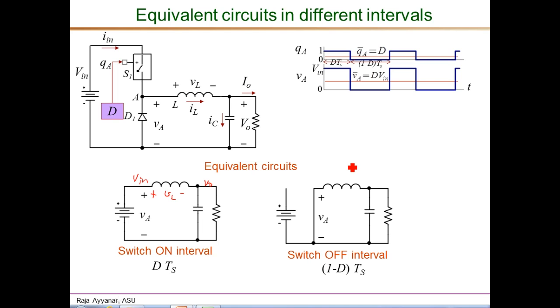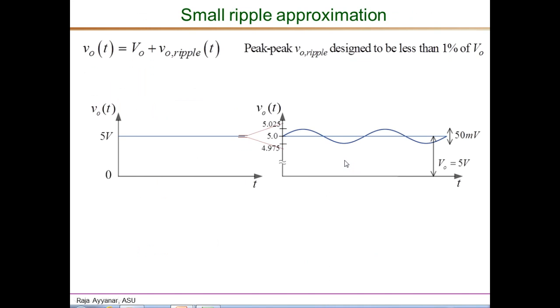We will be using these equivalent circuits extensively in drawing the various waveforms of a buck converter. We will be analyzing the various waveforms of a buck converter in the part 2 video. That analysis would be greatly simplified by this concept called small ripple approximation, which we introduce here.